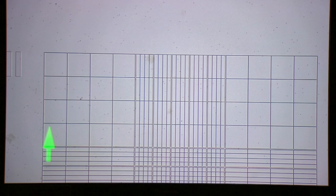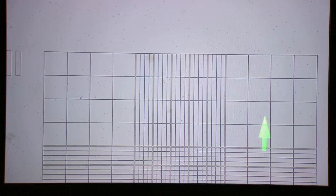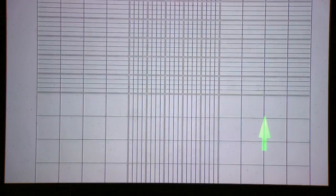For the manual white blood cell count, you're going to count the four large corner squares. So that's this one and this one. So all 16 of those smaller squares within the larger square. So the four corners is what you will be counting.